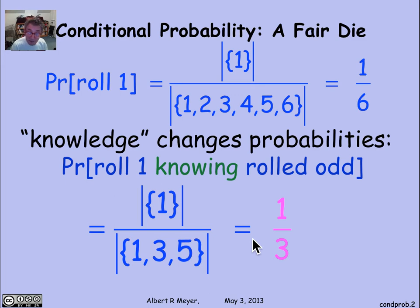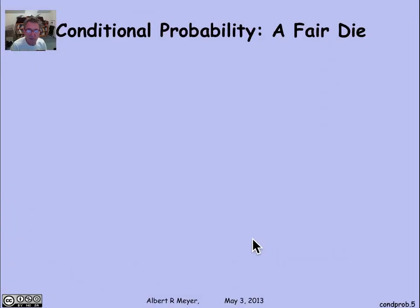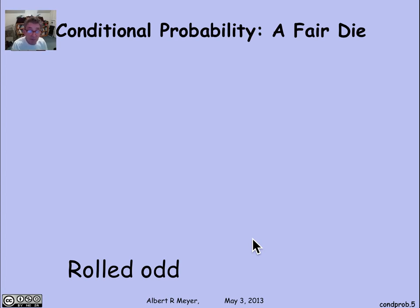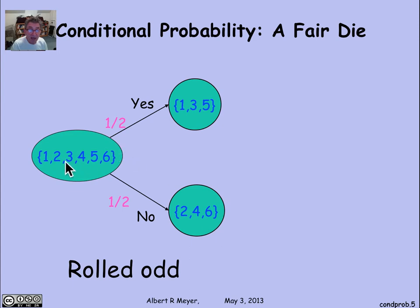One way to understand conditional probability is as a kind of experiment, where first you try to roll an odd number, and then you decide what final roll you're going to make. The first branch of the tree says: among the six possible outcomes, what are the chances that we rolled an odd number? It's 50-50 because there are three of each. So there's a 1/2 chance you rolled an odd number — outcomes 1, 3, 5 — or a 1/2 chance you didn't, with possible outcomes 2, 4, and 6.